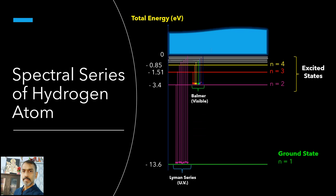If ni equal to 4, 5, 6 and higher and nf equal to 3, we get a spectral series in the infrared region which is called Paschen series. If ni equal to 5, 6, 7 and higher and nf equal to 4, we get a spectral series in the infrared region which is called Brackett series. If ni equal to 6, 7, 8 and higher and nf equal to 5, we get a spectral series in the far infrared region which is called Pfund series.